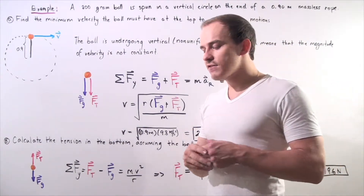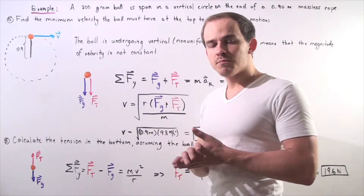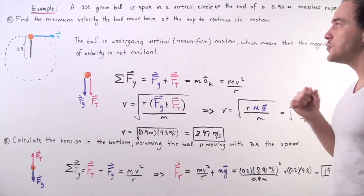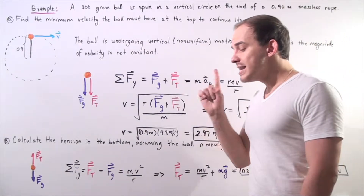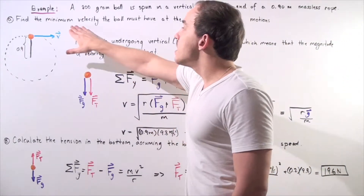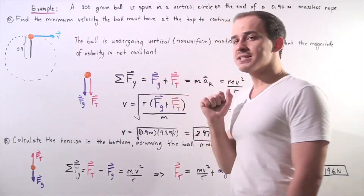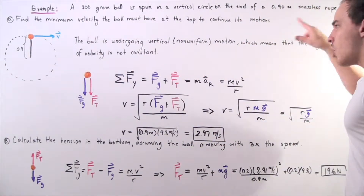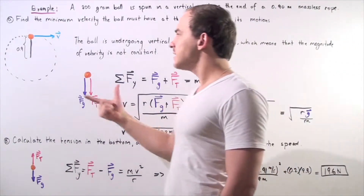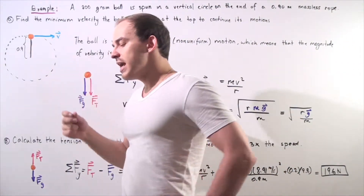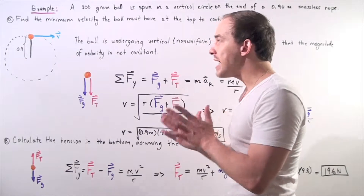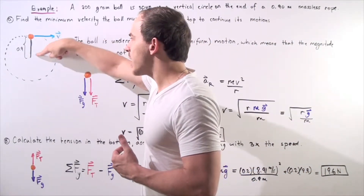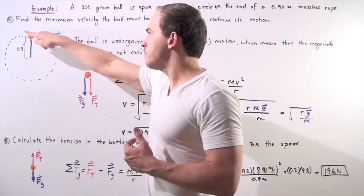Suppose we have a 200-gram ball that is spun in a vertical circle on the end of a 0.9-meter long massless rope. Looking at our diagram, the ball is attached to the rope, which is 0.9 meters long — this is the radius of the circle created by the ball's pathway.